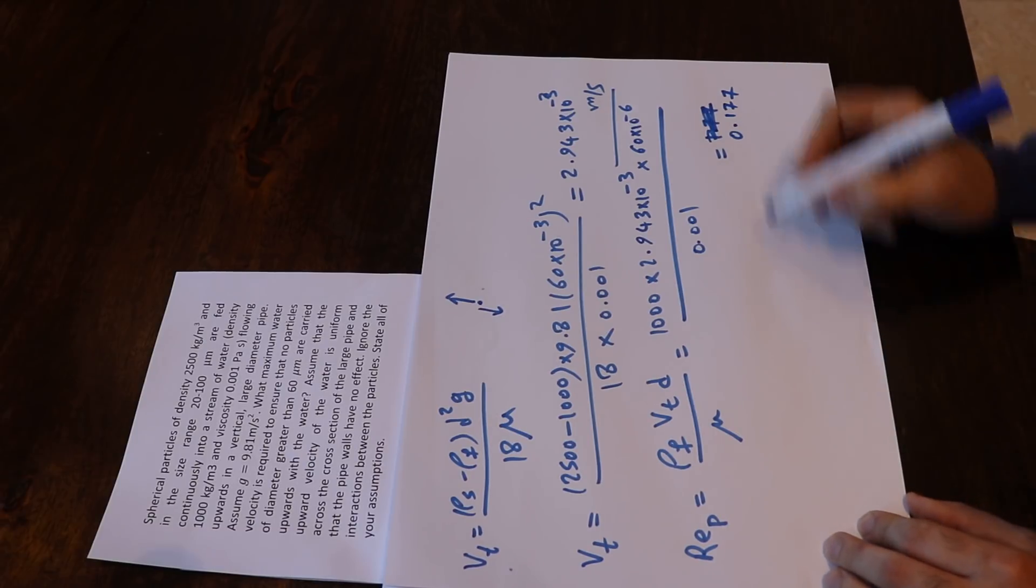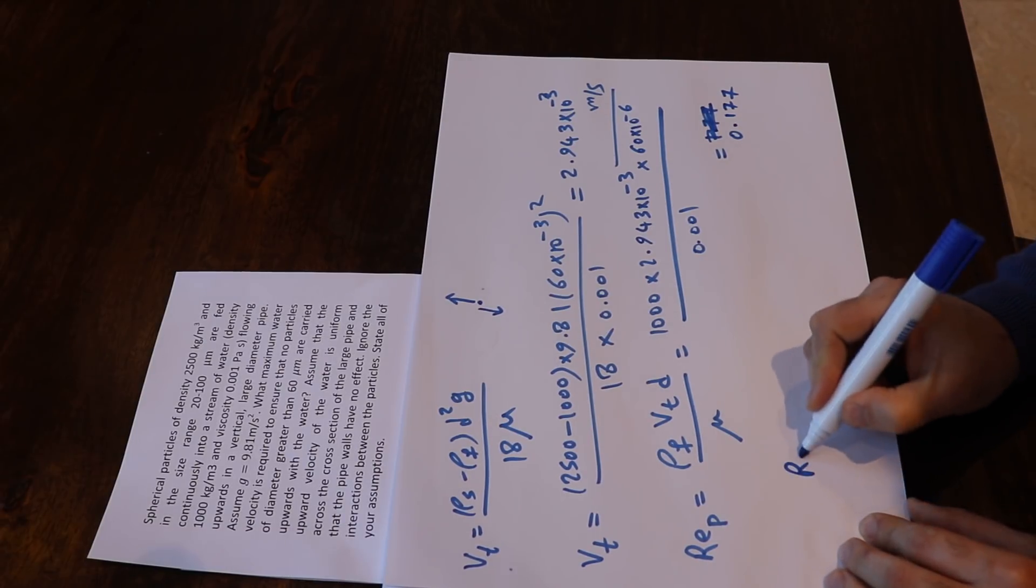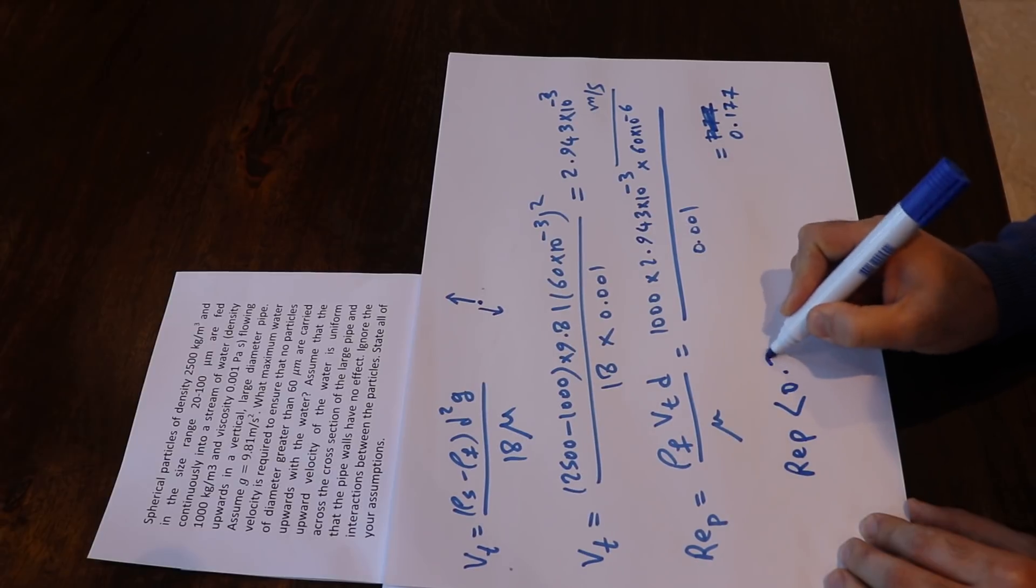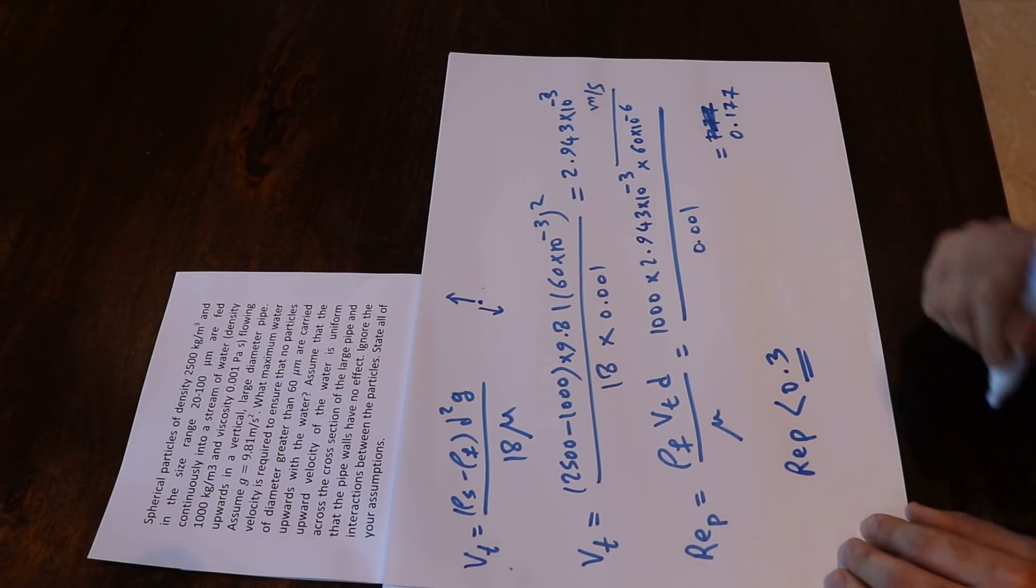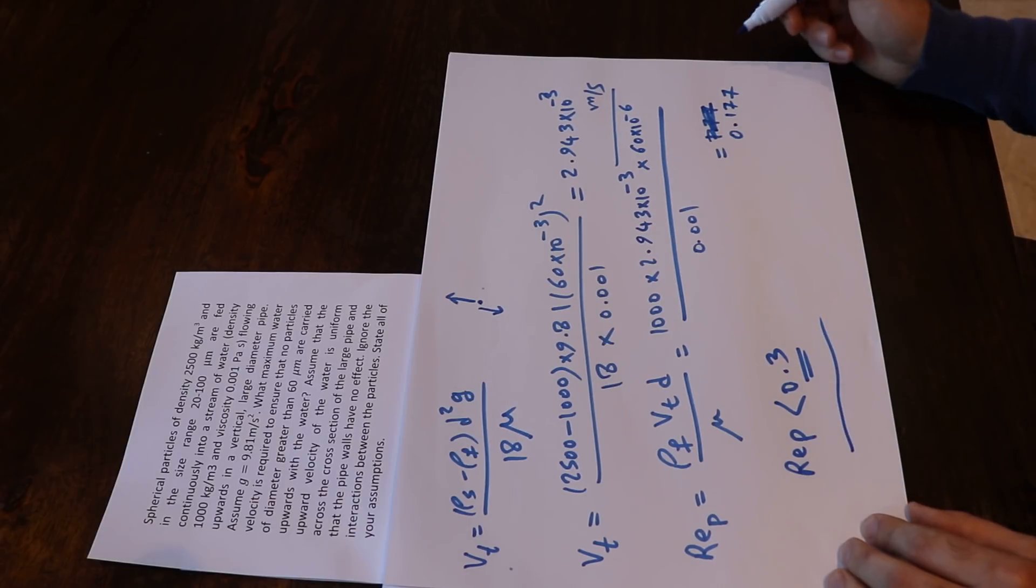And this calculated Reynolds number is less than 0.3, so the assumption of Stokes law is valid, and that's the solution to this question.